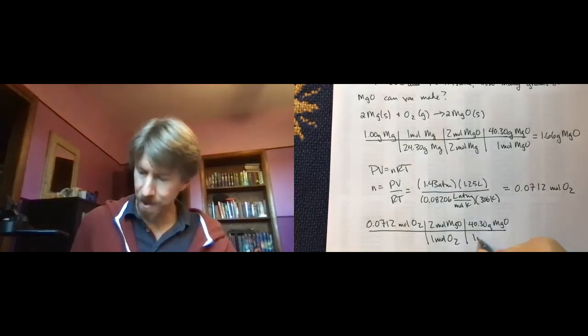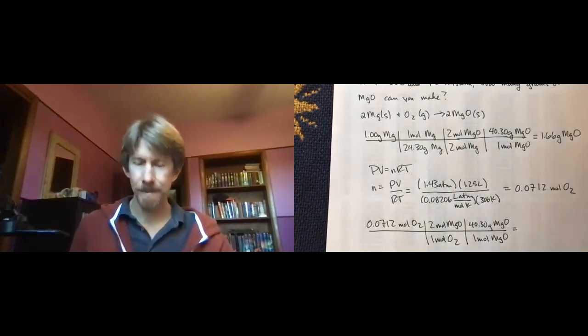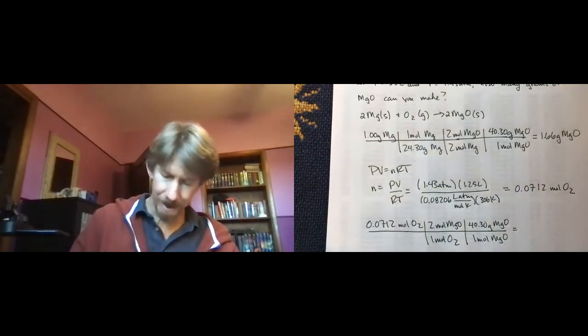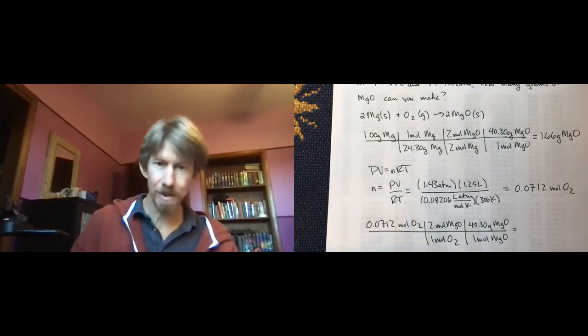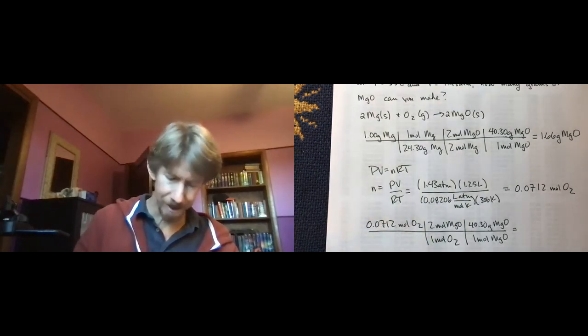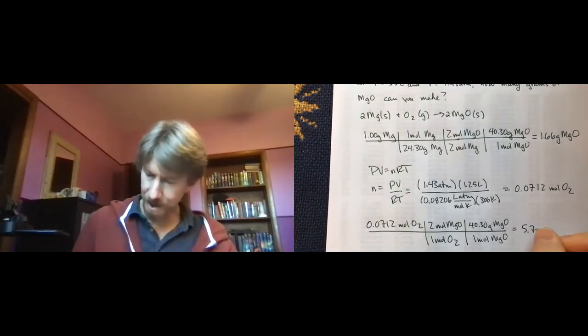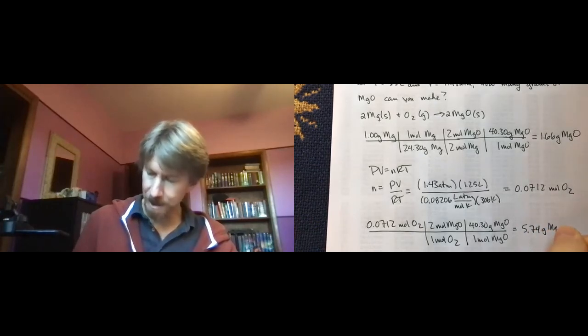As you know by now, I always write it out. And this time, again, I'm just going to go 0.0712, I'm just using the numbers as written here, not that we're in my calculator, times 2 times 40.3. Well, 5.74 grams MgO.